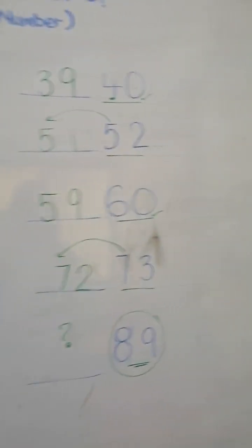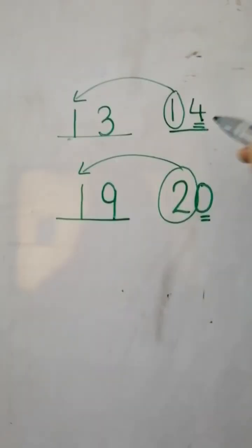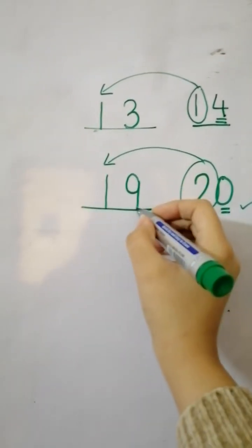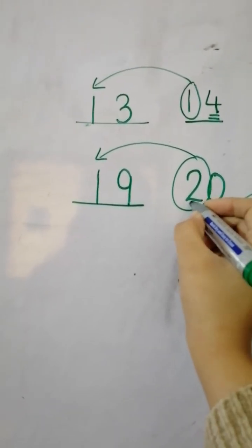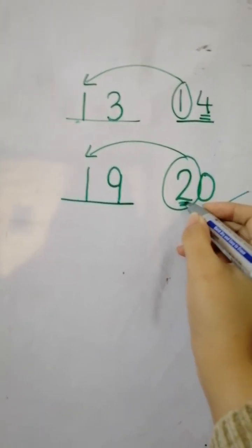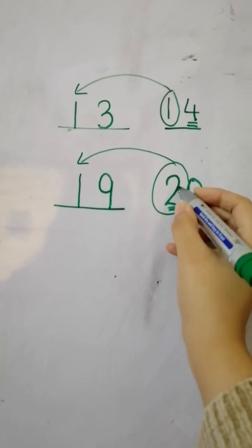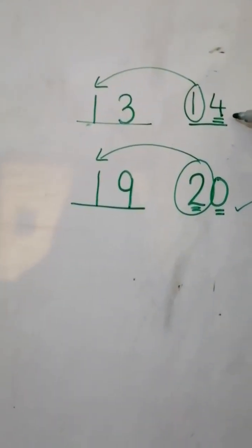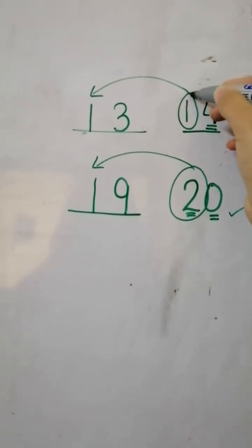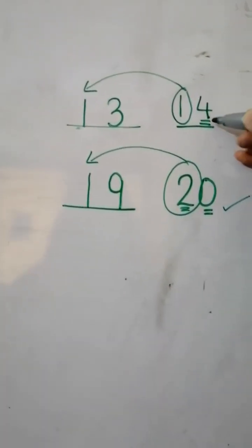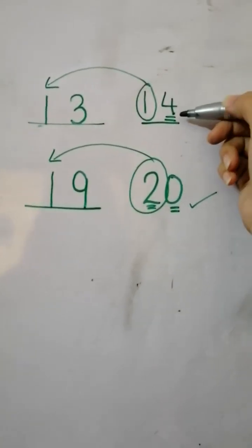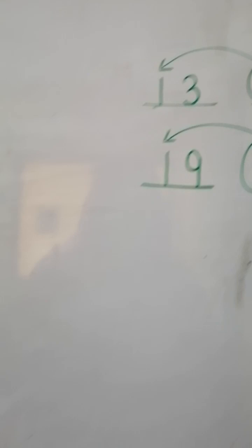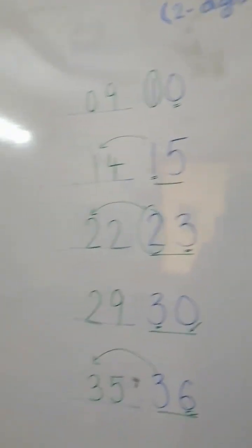This is the trick: if we have 'ty' numbers, then in the place of zero we will write number nine and we will do the before number of the tens digit — like before two is one. But if we don't have zero in the number, then we will write the tens number as it is and for the ones we will do the before number. What comes before four? Three — very good. I hope this video will help you.